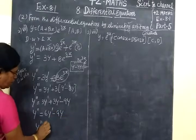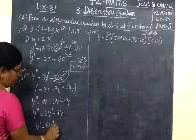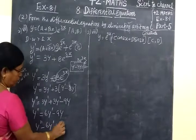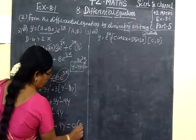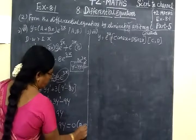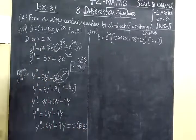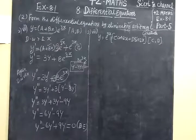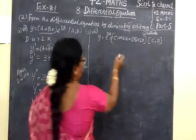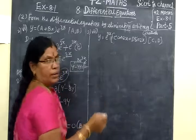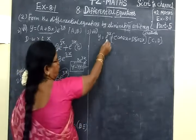So y double-dash equals 3y dash plus 3y dash equals 6y dash, minus 9y. Therefore y double-dash minus 6y dash plus 9y equals 0. This is the differential equation. We check the answer: y'' - 6y' + 9y = 0. The answer is correct.